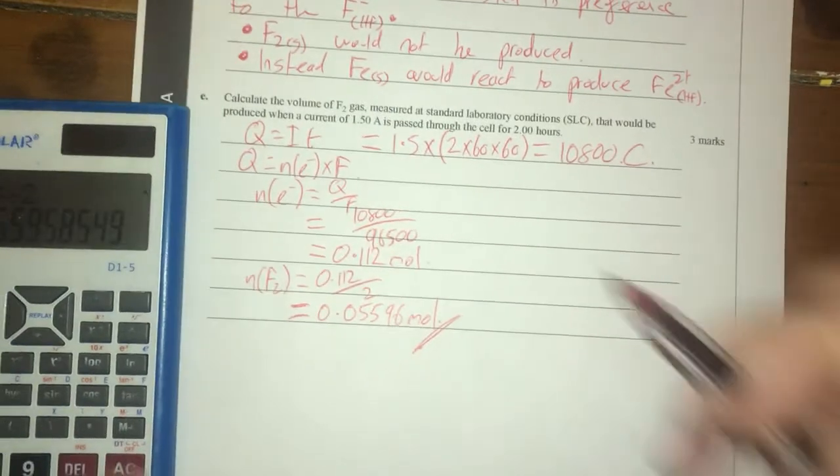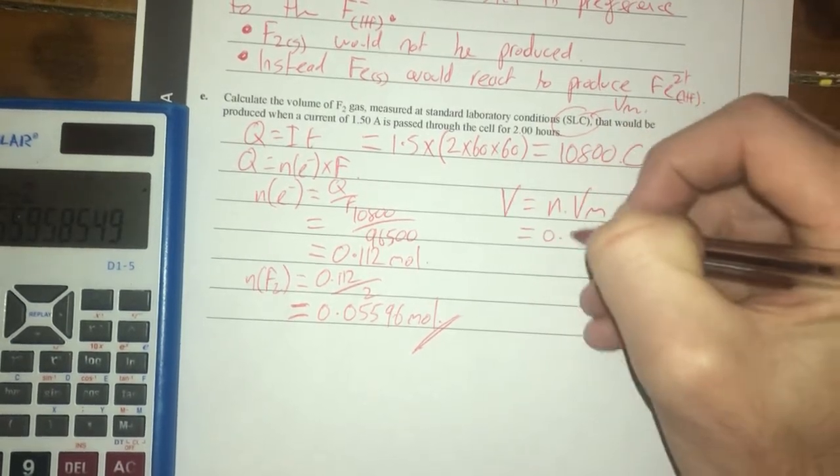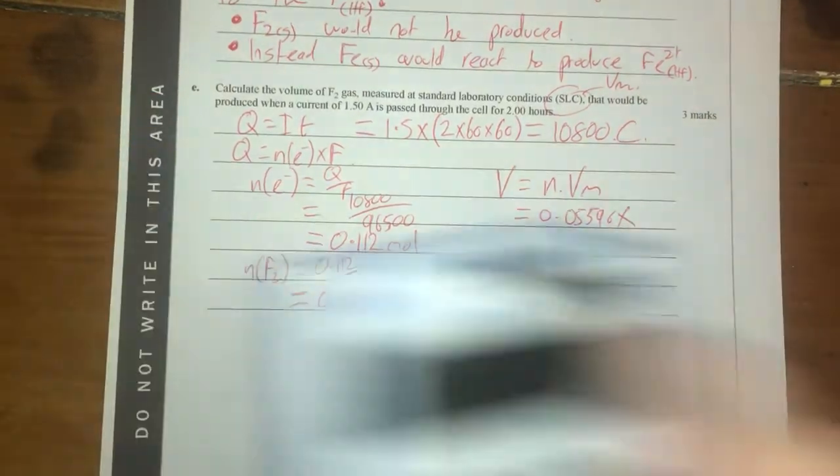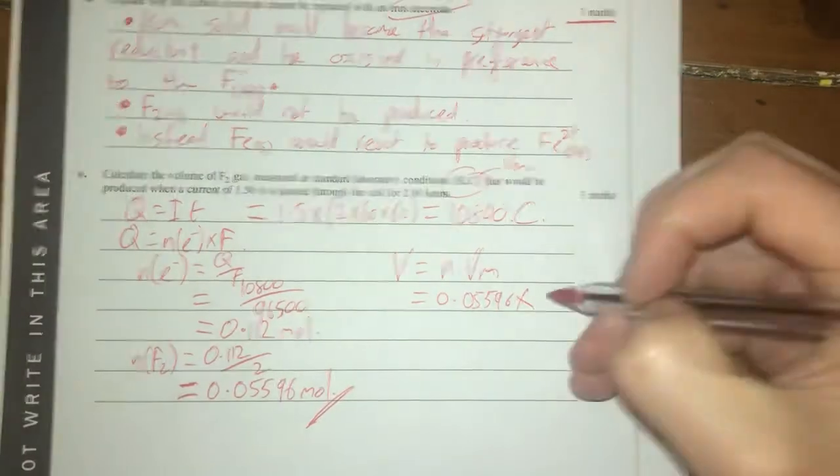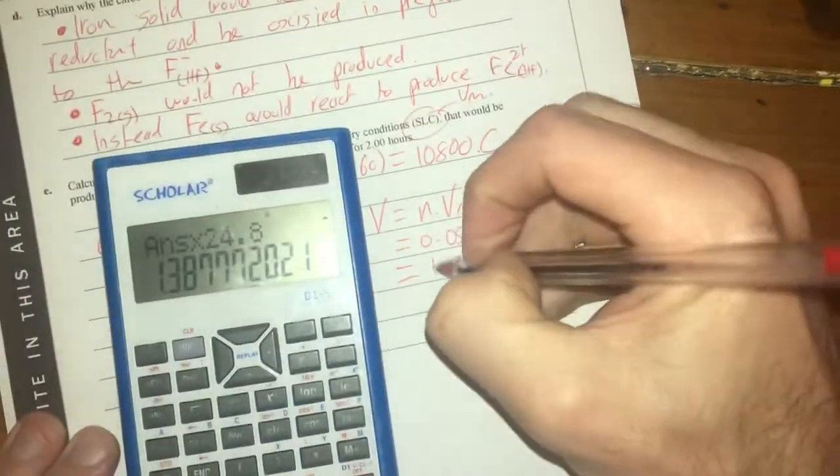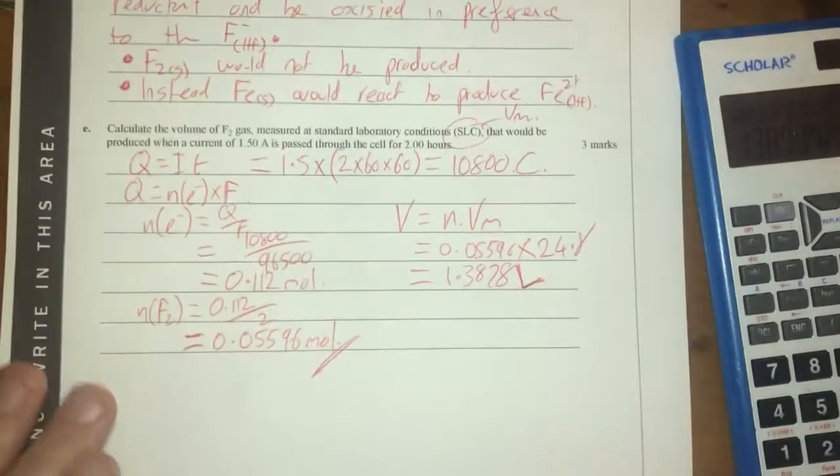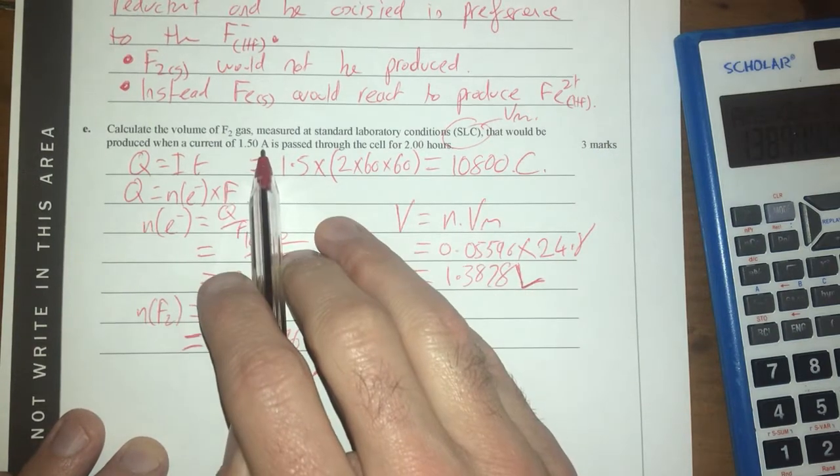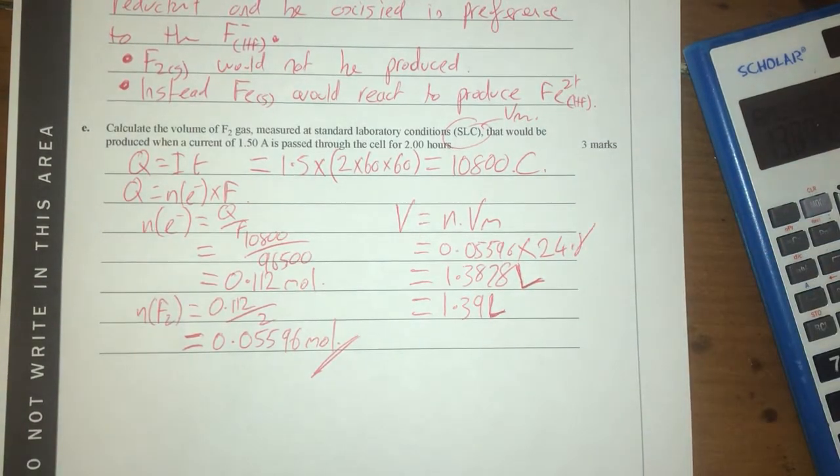There and then I need to go into my volume at standard laboratory conditions so I can use my Vm so therefore my volume equals number of moles times my Vm which is 0.05596 times Vm which I can't remember what it is. My units are constantly here, Vm is 24.8 so therefore times by 24.8 is 1.3878 liters and I've done way too many significant figures there so I'm going to work backwards and work out how many I should have. That's three sig figs, that's three sig figs, I'm going to go to three sig figs so 1.39 liters is my answer there and that should be pretty much done.